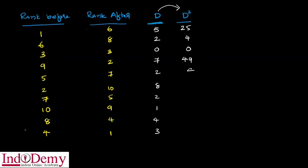Continuing the D-squared values: 4, then 64, 64, 64, 1, 16, then 9, 9. Then we find the total D-square — sigma D-square.